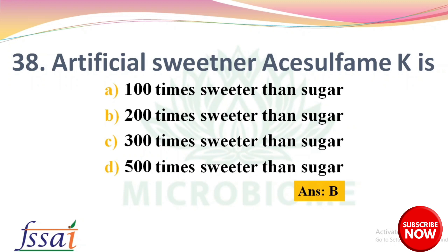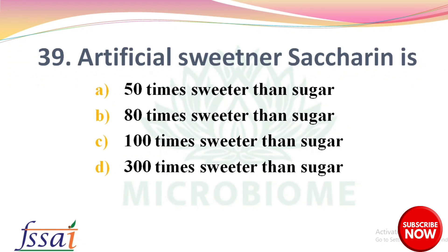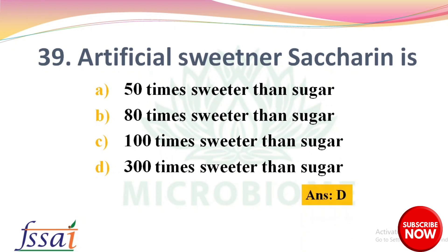Next question: the artificial sweetener saccharin is — options: 50 times sweeter than sugar, 80, 100, 300 times sweeter than sugar. The right answer is option D, 300 times sweeter than sugar.